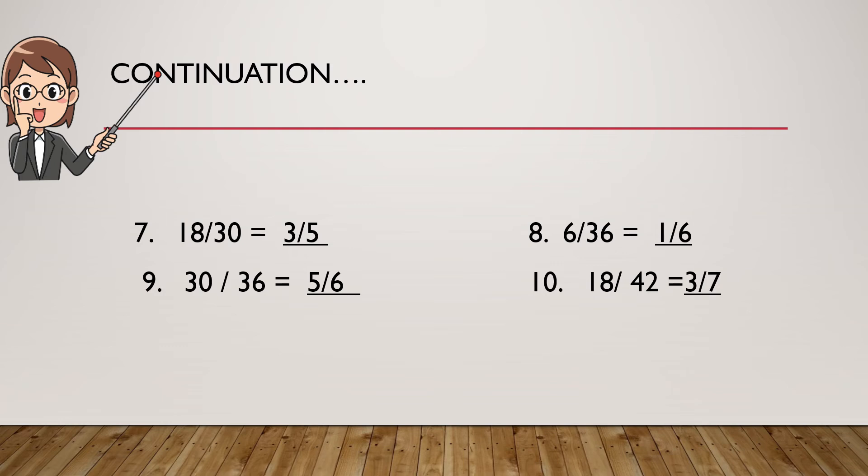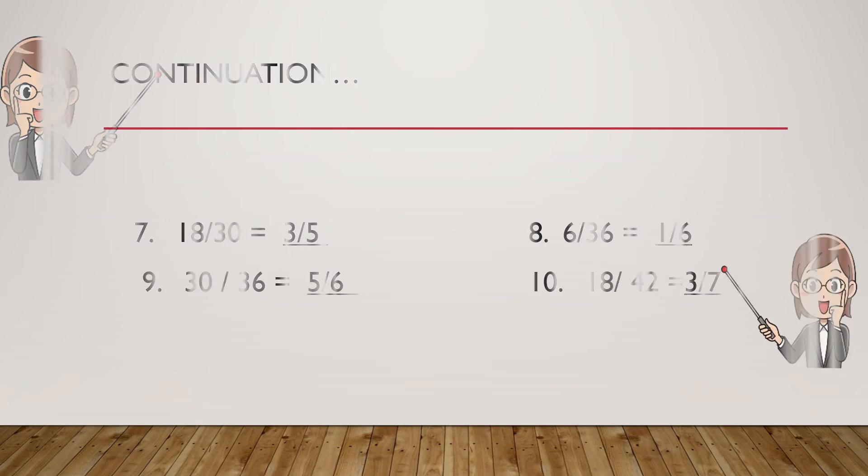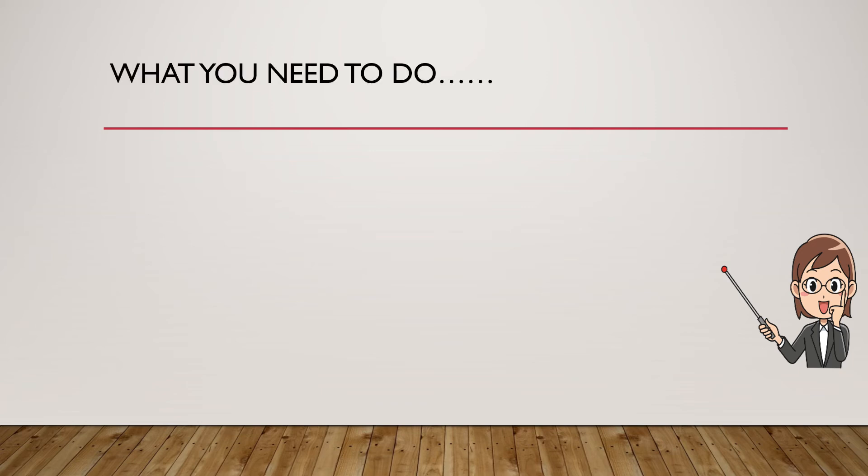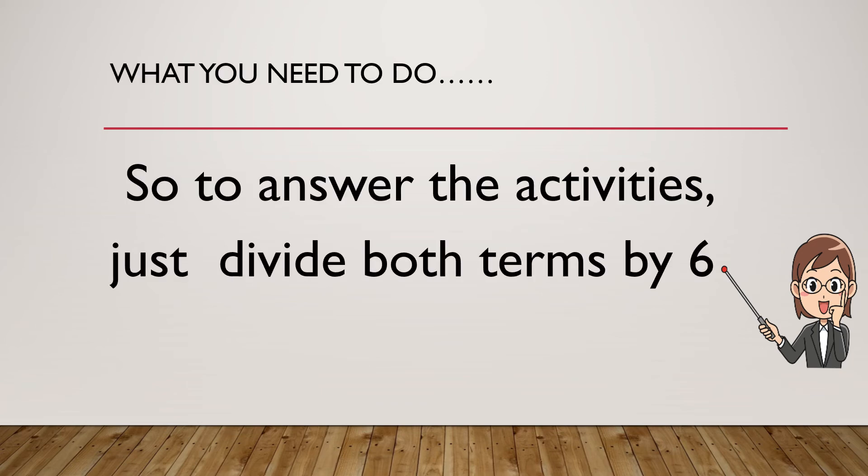So, it's very simple. What you need to do in order to change the fraction into its smallest terms is just divide both terms by 6. You divide the numerator by 6, and divide the denominator by 6 also.